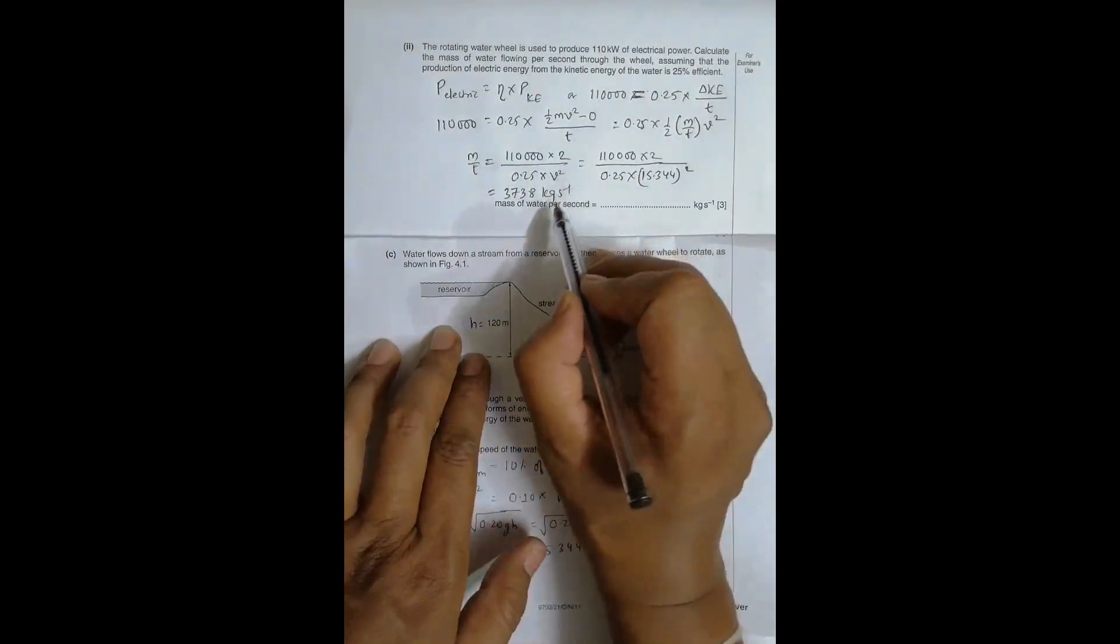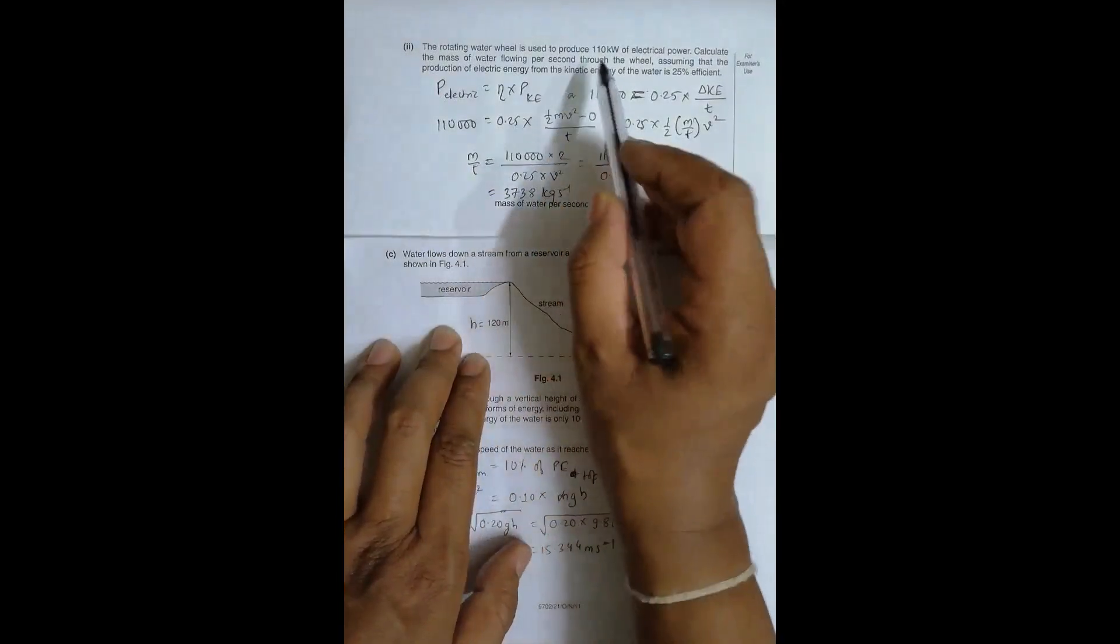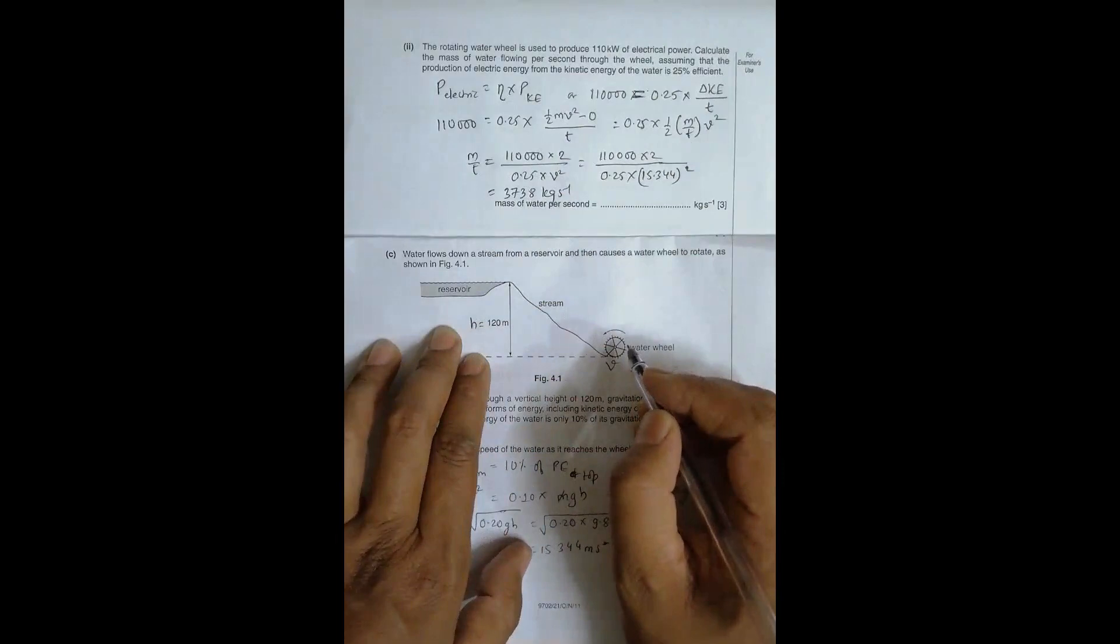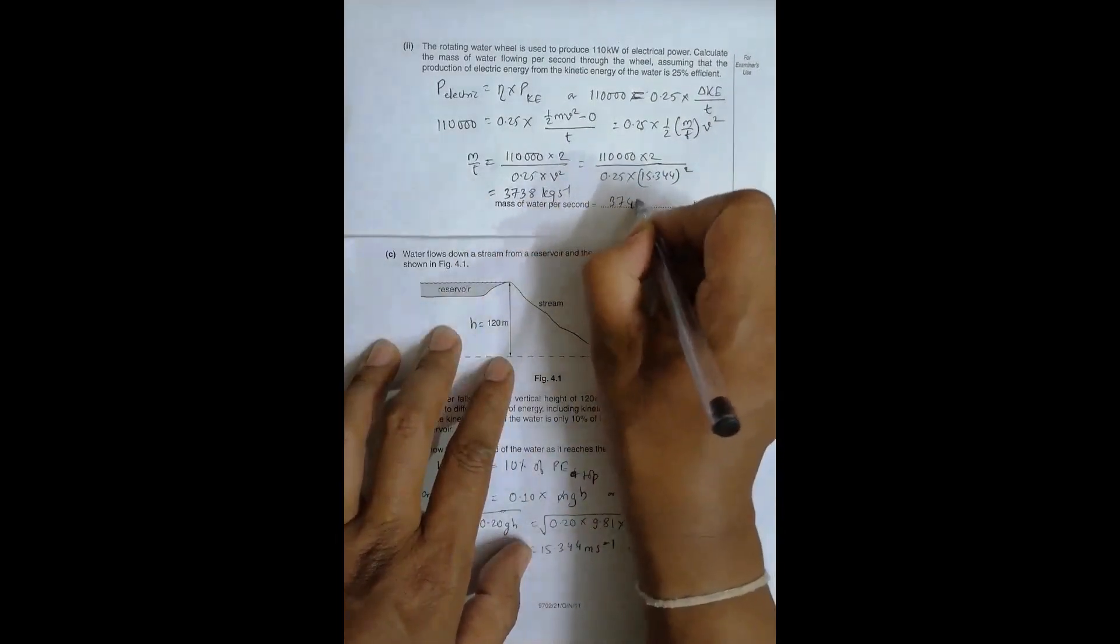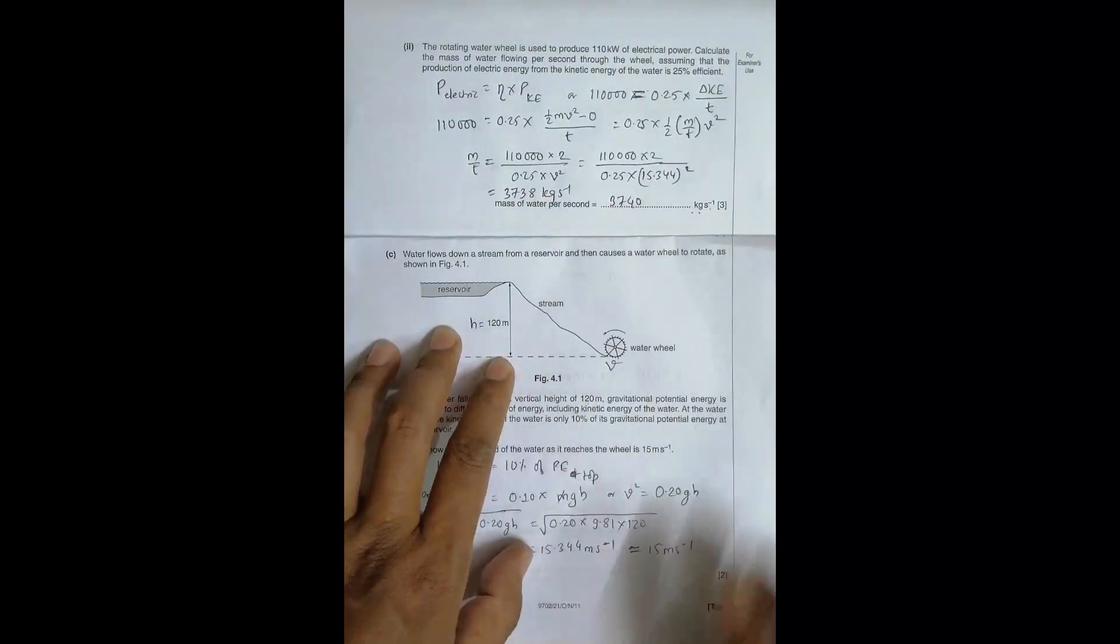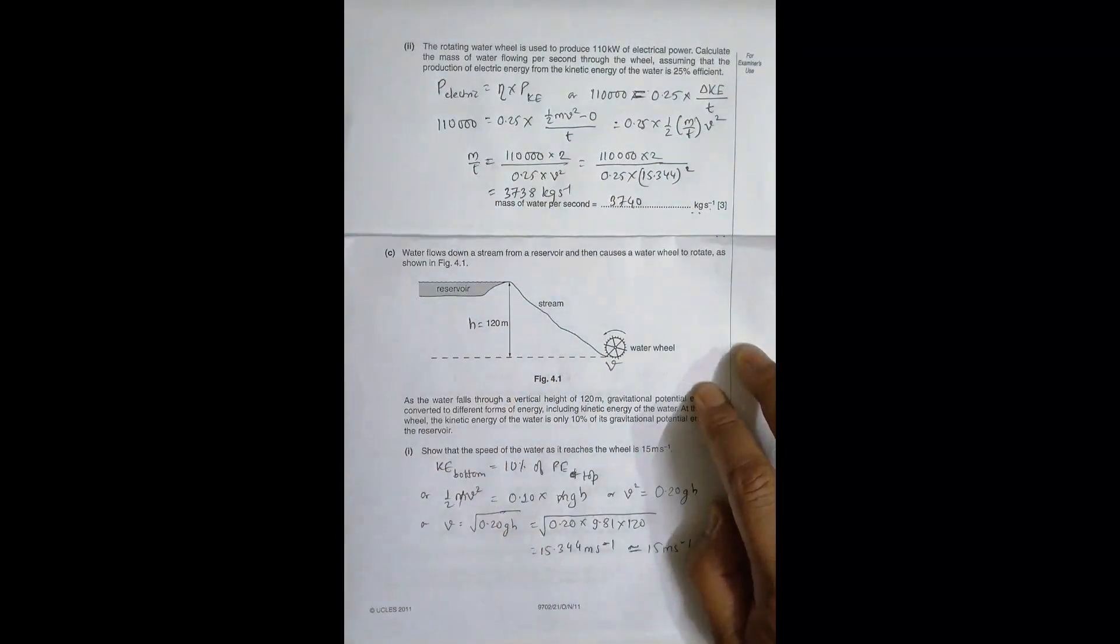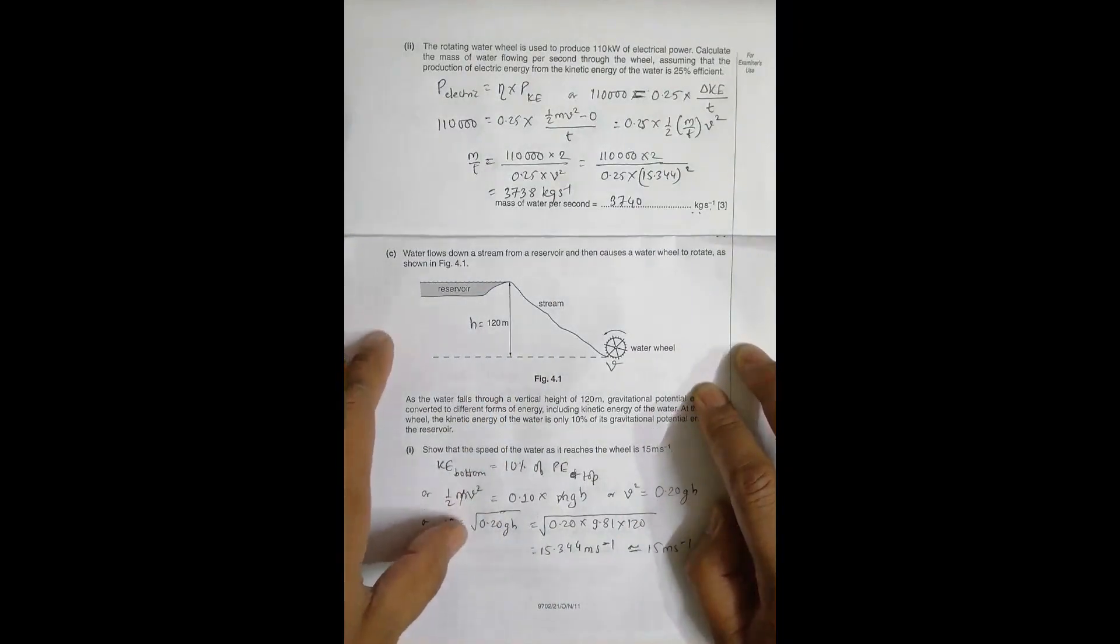So when I express this in either 2 or 3, let me use 3 significant figures here, as according to the question here. So it will be equal to 3740 kg per second. So the rate of flow of water should be 3740 kg per second, which means it is 3.74 tons per second, metric tons per second. This is really a huge amount of water.